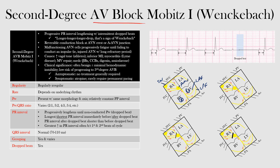In Mobitz type 1, the block often occurs right at the AV crest, where the junction between the atrium and the AV node is. In Mobitz type 2, it actually occurs lower in the conduction system, which is why it is important to differentiate between these two — and we can do that on the EKG. Our focus here is Mobitz type 1, the Wenckebach form.